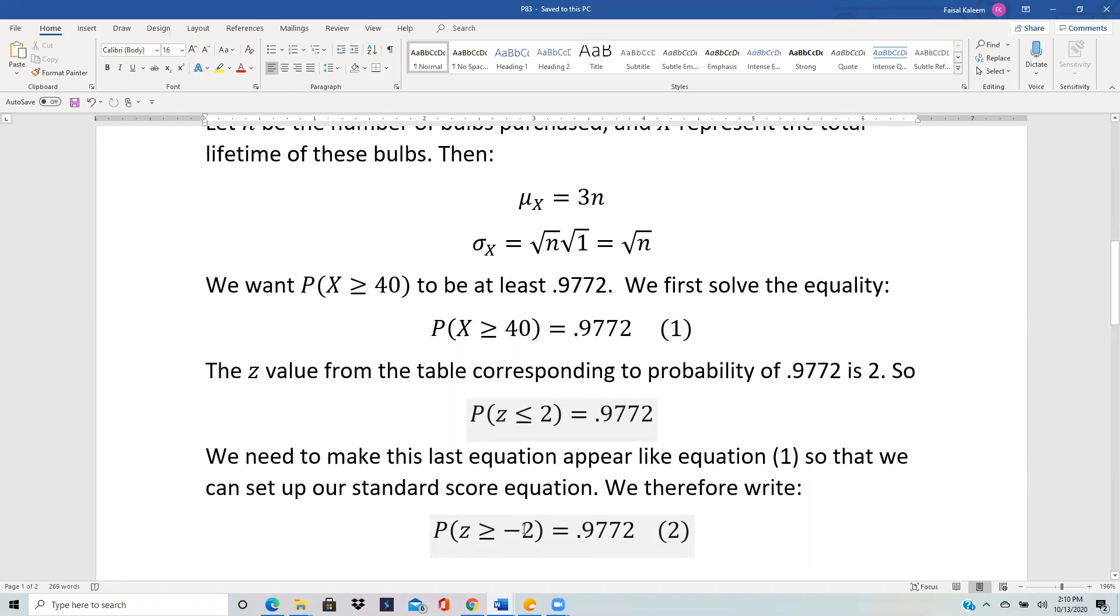You can see from the normal curve graph that less than or equal to 2 is the area on the left of 2, and greater than or equal to -2 is the area on the right of -2, which is exactly the same. So we rewrite this equation as P(z ≥ -2) = 0.9772, and now this equation matches exactly our equation.